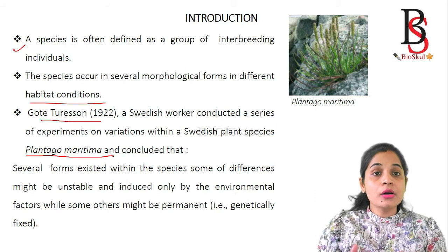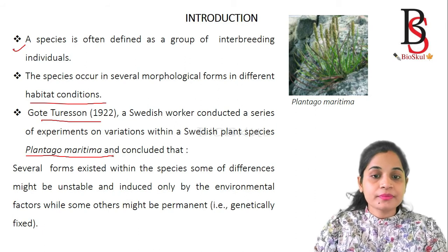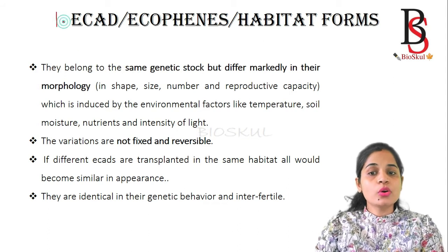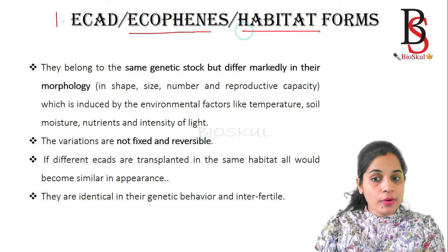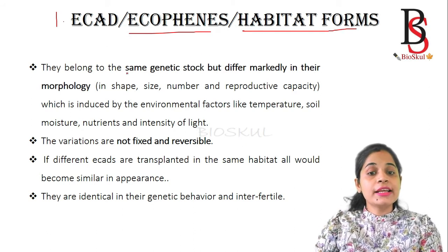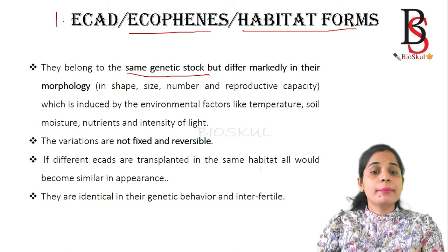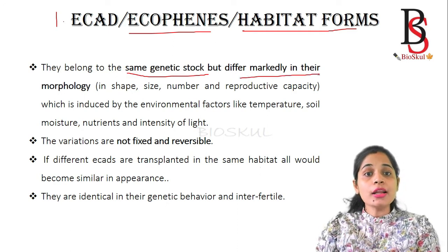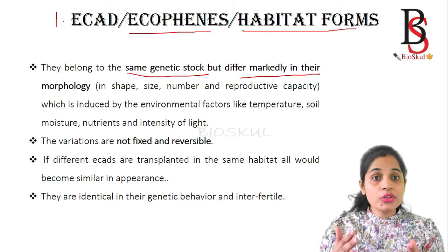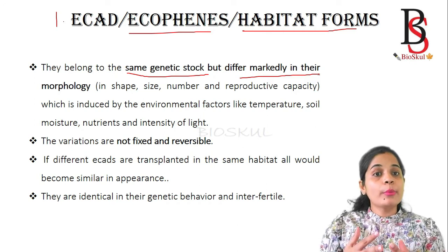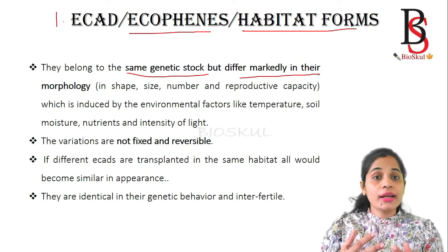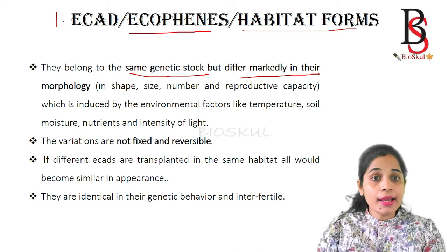So let us know what are the forms of species. The first one is known as the Ecarth, also called eco-habitat forms. Ecarths are genetically similar but they markedly differ from each other in their morphology. They differ in morphology because of environmental conditions like temperature, soil, moisture, nutrients, and the intensity of light they absorb.